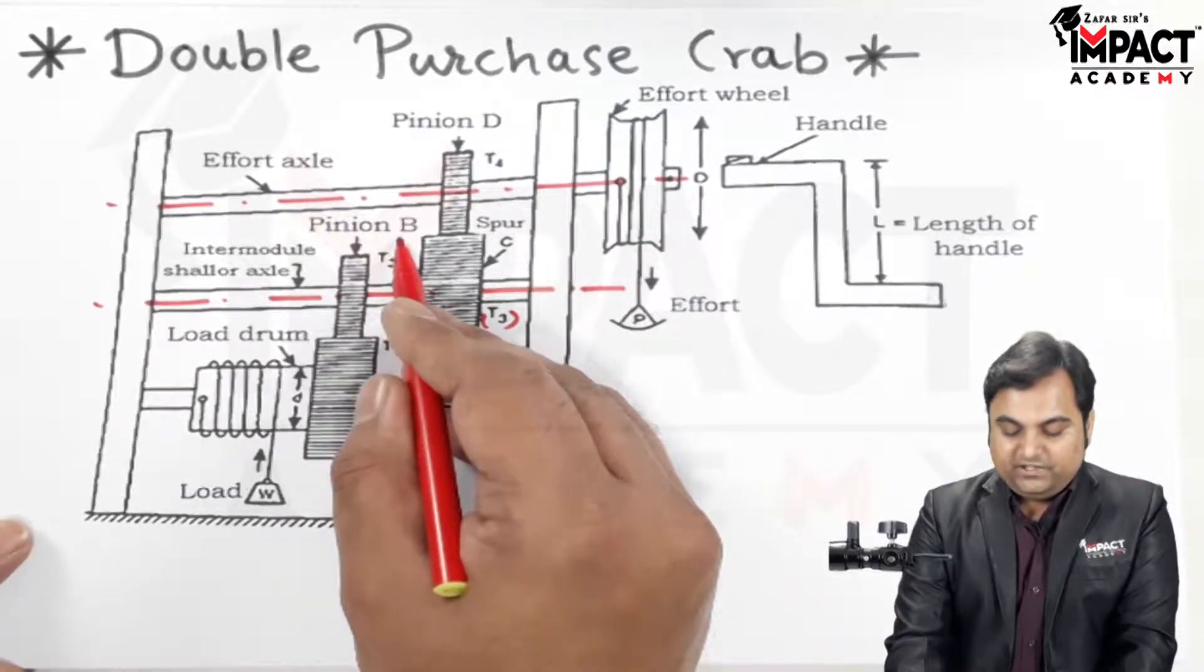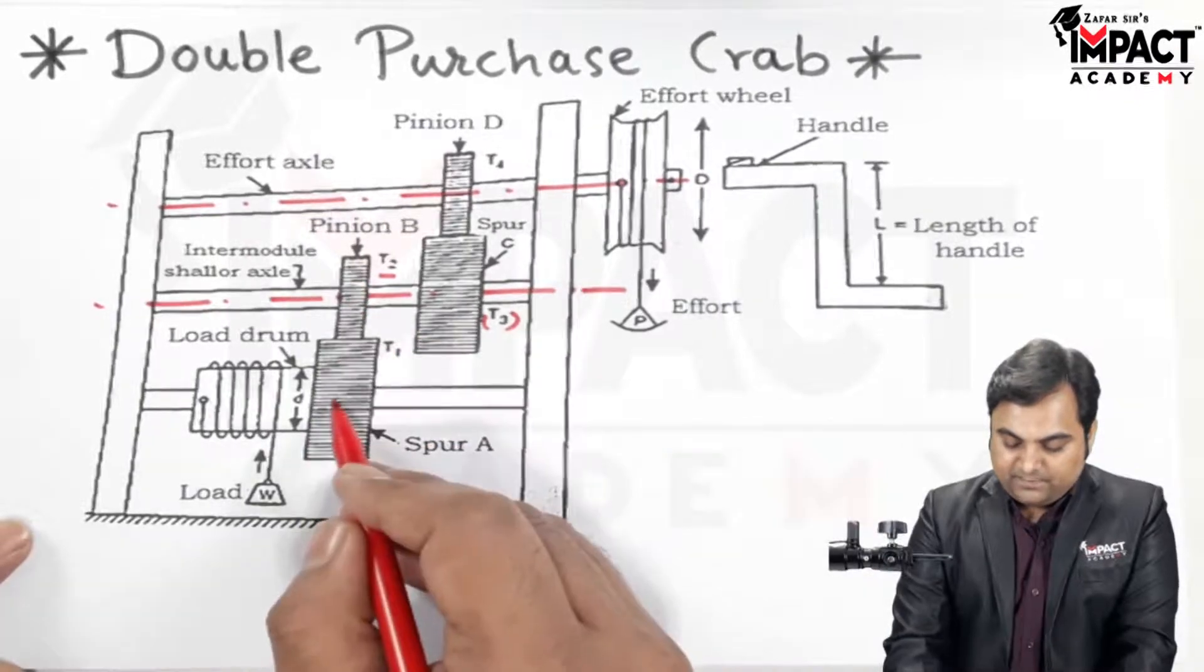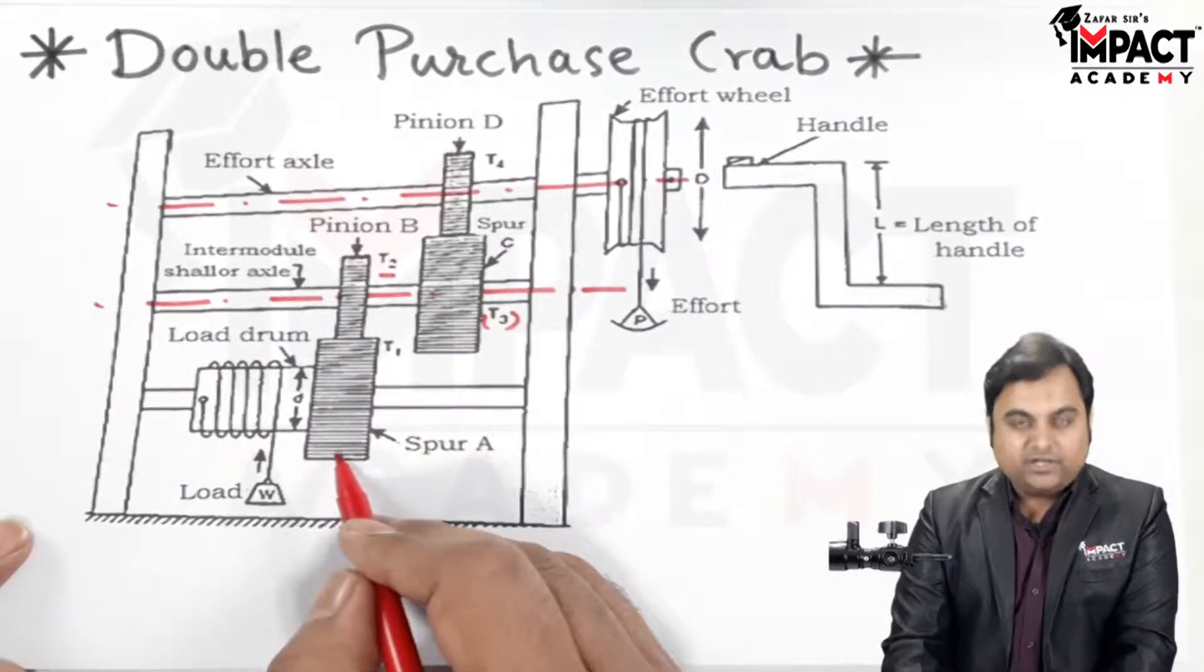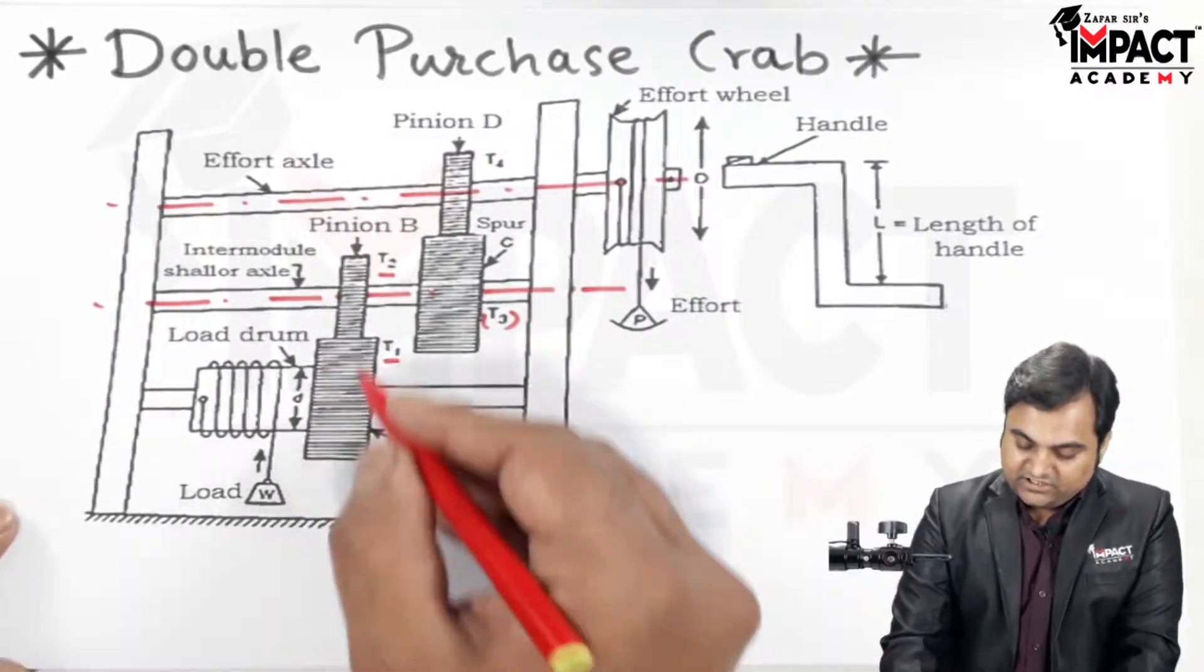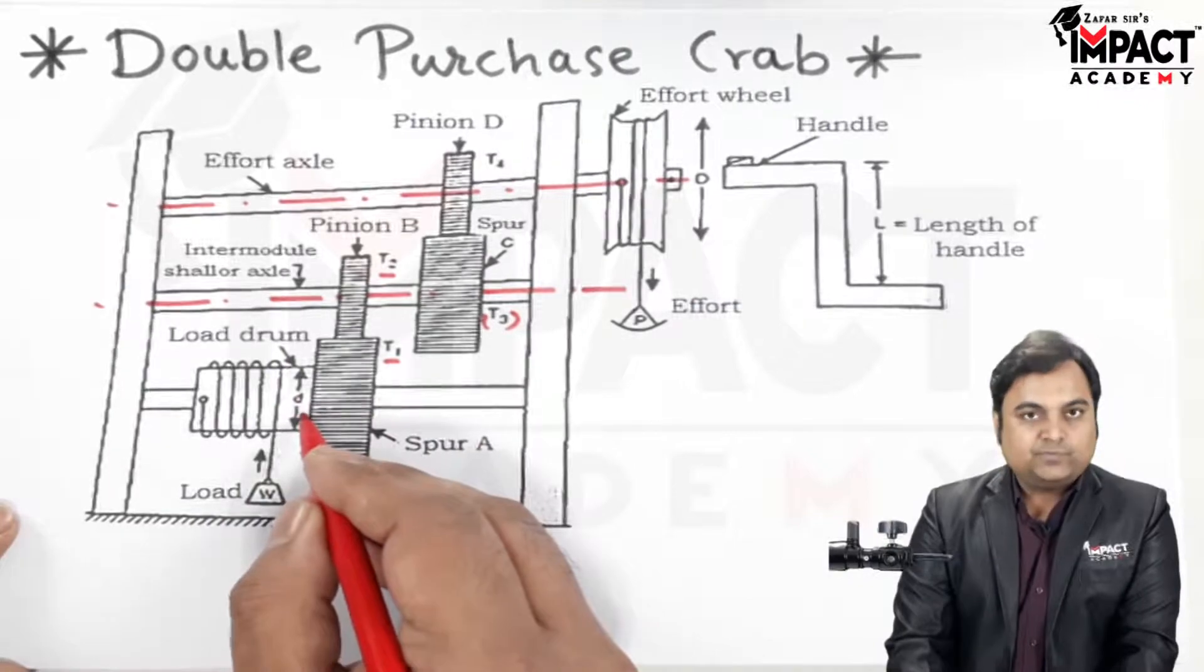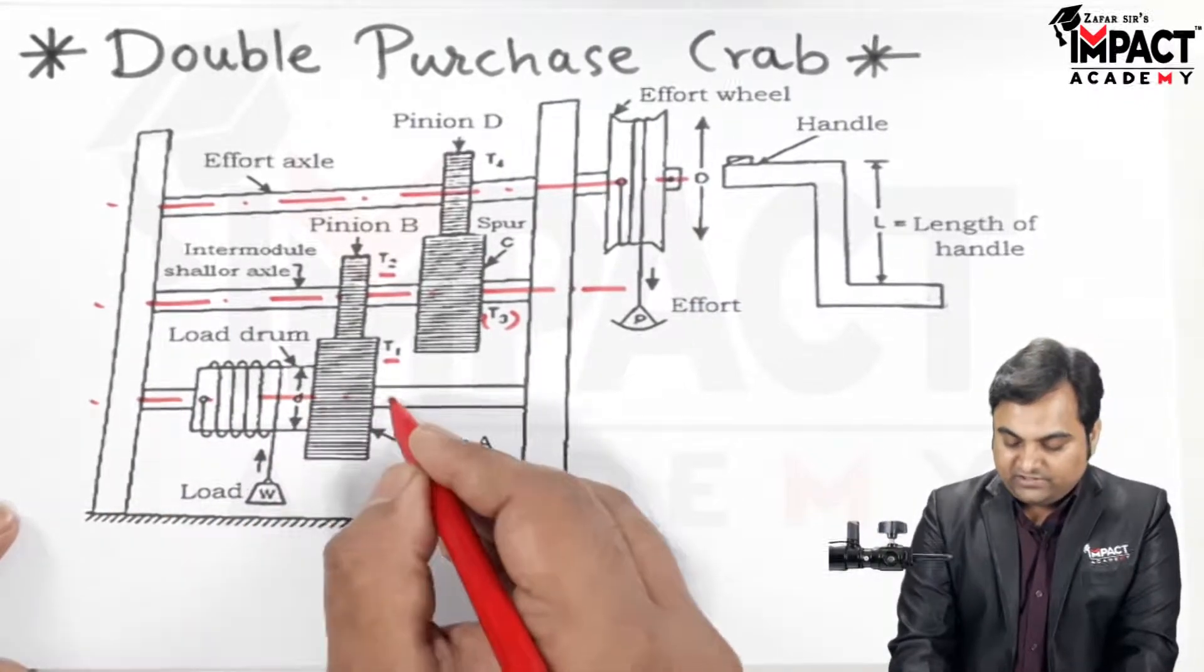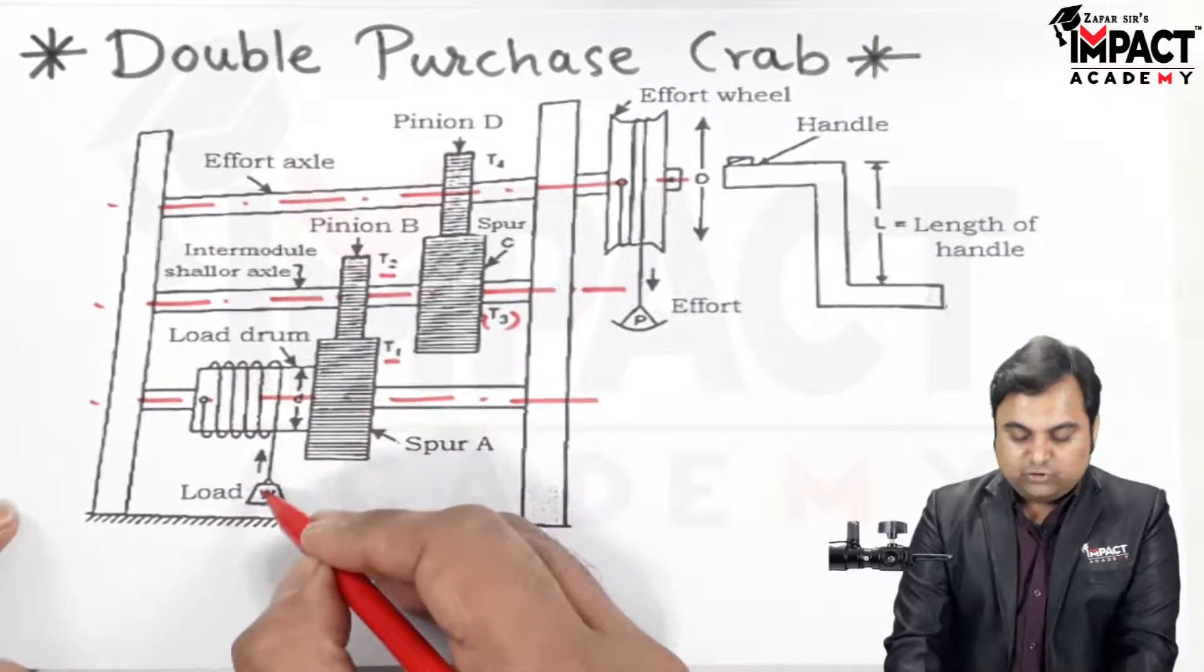Pinion B has number of teeth t2 and this pinion is in mesh with another spur gear having number of teeth t1. This spur gear is connected to a load drum having diameter small d, and they are mounted on the same shaft having the same axis. Finally, the load drum is carrying this load.